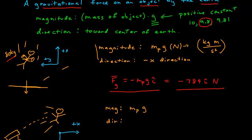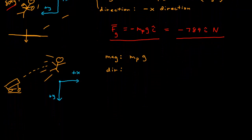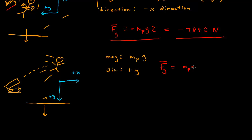Because the model says the gravitational force direction is always toward the center of the Earth, in this new coordinate system the center of the Earth is down, which is the positive y-axis. So here the direction is positive y. To translate the model and coordinate system into a mathematical representation: my force due to gravity equals the magnitude m_p·g in the positive y direction, so positive ĵ. The force due to gravity is positive 784 ĵ newtons. There is no one specific formula — you have to translate what the model says into each problem given the coordinate system.